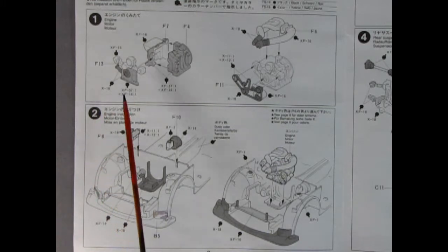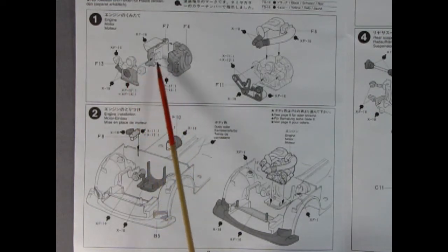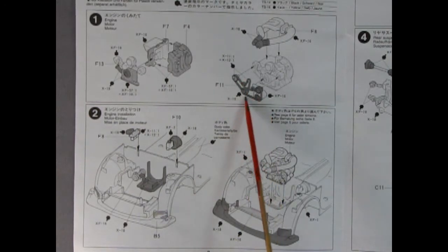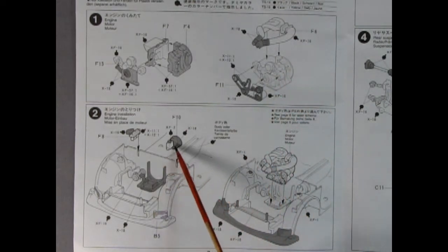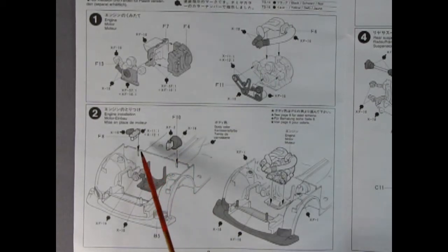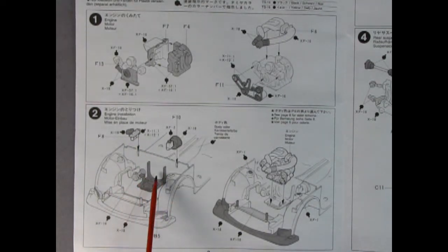Panels one and two show us how to build our engine, and then how to install it in the chassis. First off we've got our right and left hand side of the engine block, and then our front cover. We've got this wonderful serpentine belt, and then our intake. Down here we've got our brake master cylinder and the reservoir bottle that glues onto the chassis back here. It shows you what colors to paint all these components before installing your engine.